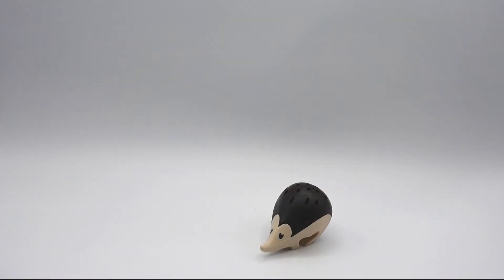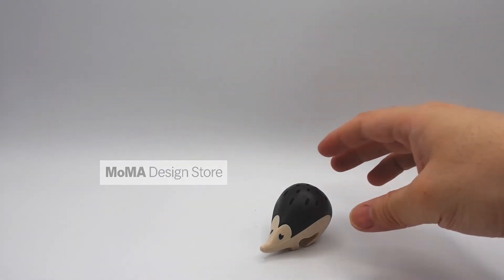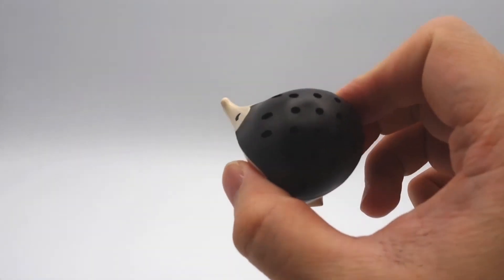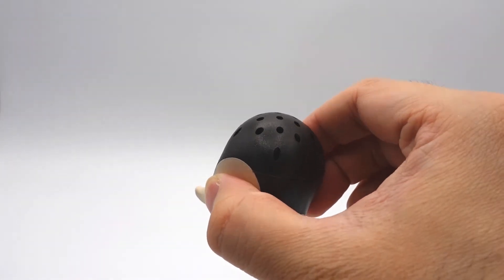My other favorite toothpick holder is called the key pick. This is an exclusive item from the Museum of Modern Art's store. This one is made in the shape of a hedgehog and there are holes in the back for you to put toothpicks in.